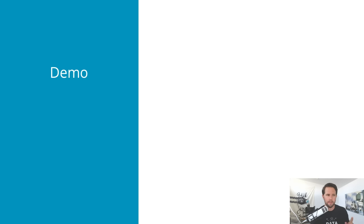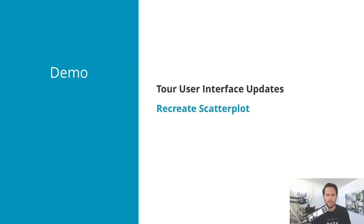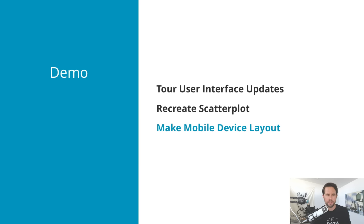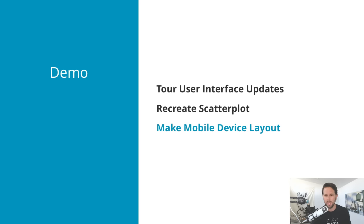You can go into individual elements like story titles or worksheet titles and set things like bold, underline, or italic. Then there are titles — they pop up immediately, you just double-click on them, type whatever you want, or it defaults to the name of the sheet. So step one, or the first demo — we're going to have four demos, one for each section. We're going to look at the user interface updates in Tableau, then recreate that scatterplot, and then make a mobile device layout. That's something new in Tableau 10.